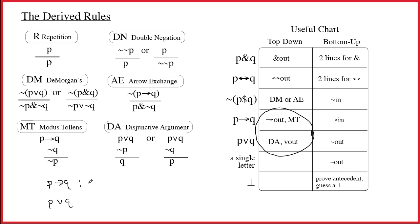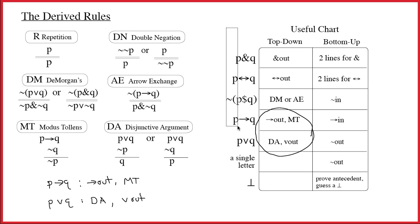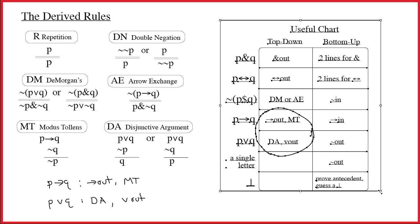If you've got the arrow as the main connective, there are two rules: arrow out and modus tollens. If you've got the wedge as the main connective, use DA or wedge out. Now let's get rid of the useful chart and put a proof in its place.